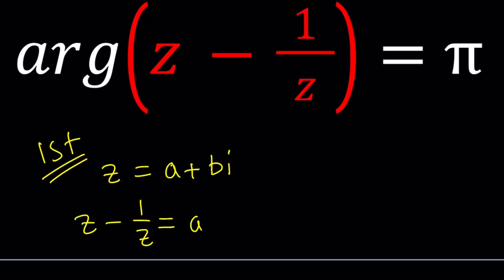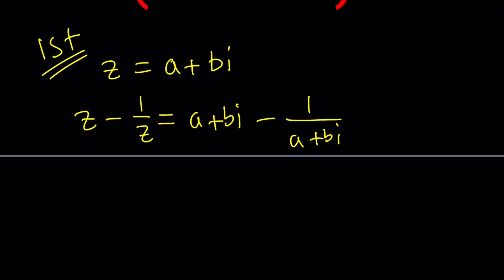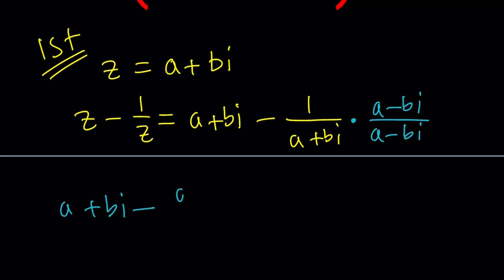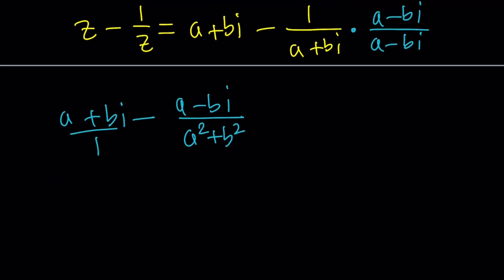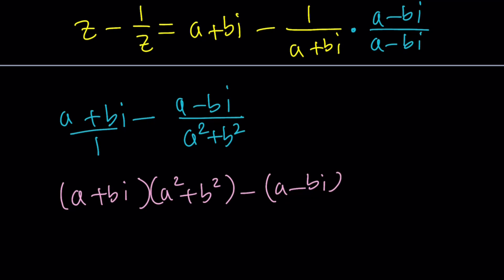We have A plus BI minus 1 over A plus BI, and here we're supposed to use the conjugates A minus BI and A minus BI. That's going to give us A plus BI minus (A minus BI) divided by A squared plus B squared. Remember, when you multiply two complex conjugates, you always get a real number in the form of a sum of two squares.